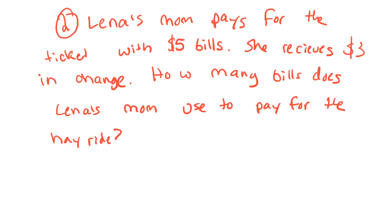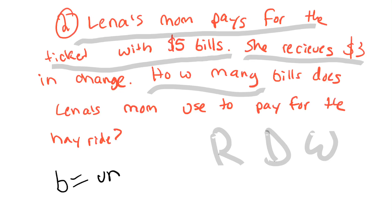Number two says, Lena's mom pays for the ticket with $5 bills. She receives $3 in change. How many bills does Lena's mom use to pay for the hayride? Okay, so remember, read, draw, write. So let's read it again. Lena's mom pays for the ticket with $5 bills. She receives $3 in change. How many bills does Lena's mom use to pay for the hayride? So what is the unknown? Let's say B for bills equals the unknown.